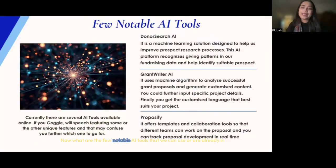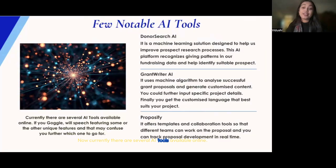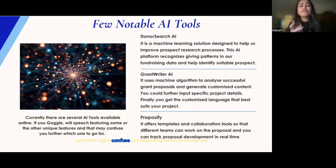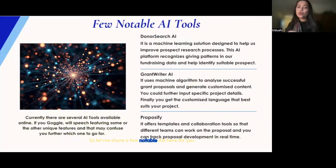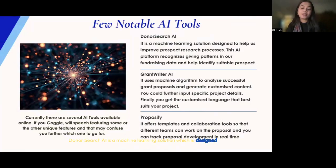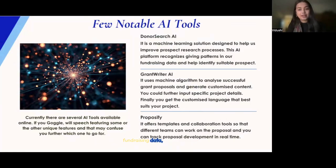What are a few notable AI tools we can use? Currently there are several AI tools available online, and some have specific unique features which might be confusing. The first is DonorSearch AI — a machine learning solution designed to help improve prospect research processes. This AI platform recognizes giving patterns in fundraising data and can help identify suitable prospects.